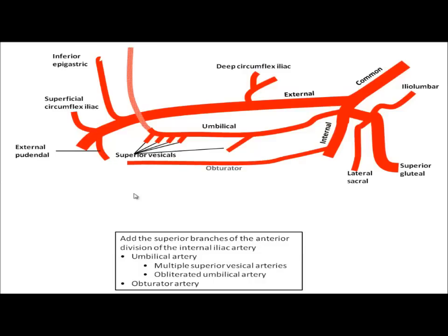Next up is the obturator artery. It's supplying the muscles of the medial thigh and is traveling out through the obturator foramen, and has a pretty long course across the true pelvis to get there, and can be seen pretty readily on dissection, but also traumatized pretty readily if you're not careful in the surgical field.